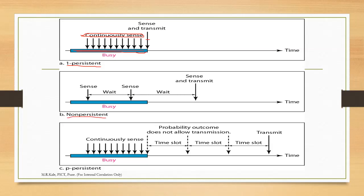The second method is called non-persistent, meaning the sensing task is not continuously done. At a given time instance the station senses the channel. If it is found to be busy, it will wait for a random time and then sense again — unlike one-persistent where continuous checking is ongoing. In non-persistent, the channel is not sensed continuously but after waiting for a random time. If again it finds it busy, it waits again for another random time. The waiting periods are random, not fixed time slots. Whenever it finds the channel idle, it will transmit the data.